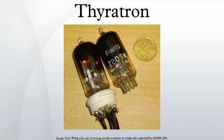In the 1920s, thyrotrons were derived from early vacuum tubes such as the UV-200, which contained a small amount of argon gas to increase its sensitivity as a radio signal detector, and the German LRS relay tube, which also contained argon gas. Gas rectifiers, which predated vacuum tubes, such as the argon-filled General Electric Tunga Bulb and the Cooper-Hewitt mercury pool rectifier, also provided an influence.